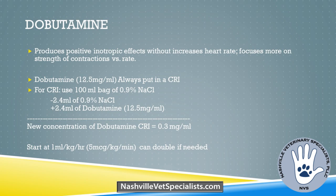Dobutamine is another positive inotrope — really good for patients with heart issues going into surgery because it doesn't significantly affect heart rate. It mostly increases the contractility or strength of the pump per heartbeat, increasing blood pressure without much heart rate change. The range is 5 to 20 mcg per kg per minute. It does modest vasodilation but really increases the forward flow of each beat.